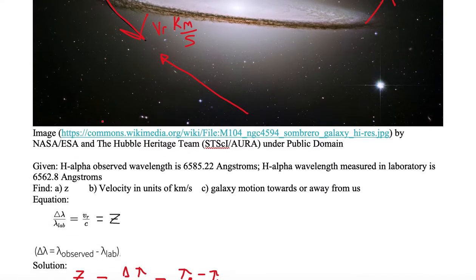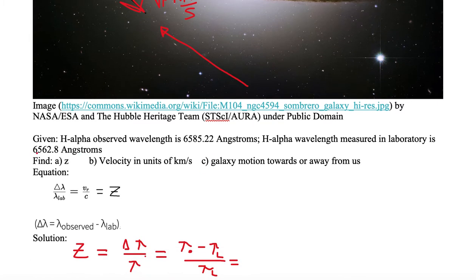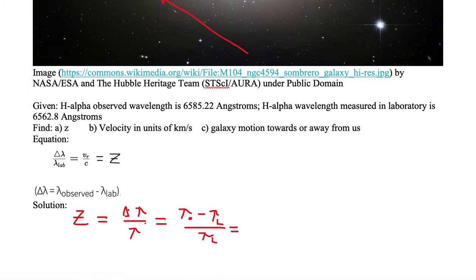We find the H-alpha line observed at 6585.22 angstroms, and in the lab it's measured at 6562.8 angstroms. We need to determine the shift in this wavelength relative to the laboratory wavelength, which will give us our Z value and our radial velocity. So let's substitute in: Z is equal to delta lambda over lambda.